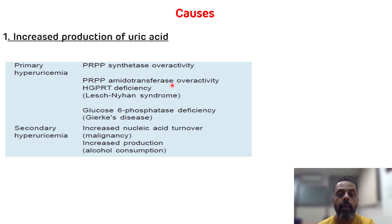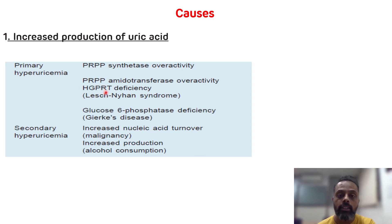Another cause is absence of HGPRT, that is hypoxanthine guanine phosphoribosyl transferase enzyme. If there is a deficiency of this enzyme then it leads to Lesch-Nyhan syndrome. Another cause is glucose-6-phosphatase deficiency which leads to von Gierke's disease, which is type 1 glycogen storage disease. These are the causes for the primary hyperuricemia.